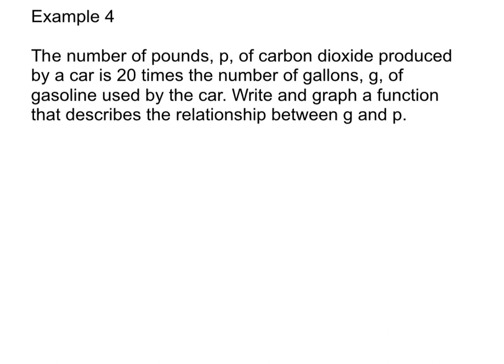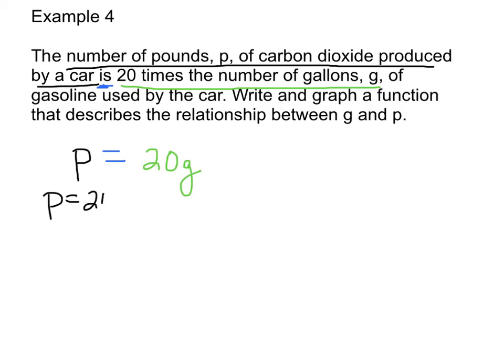Example 4. Please take the time to write down this problem. The number of pounds, P, of carbon dioxide produced by a car is 20 times the number of gallons, G, of gasoline used by the car. Write and graph a function that describes the relationship between G and P. First, we're going to underline keywords and write a function. The number of pounds, P, so we're going to start with P. 20 times the number of gallons, which is G, would just be P equals 20G. Our equation is P equals 20G.